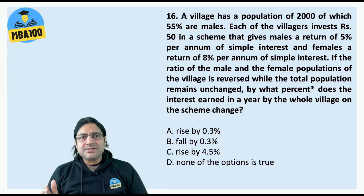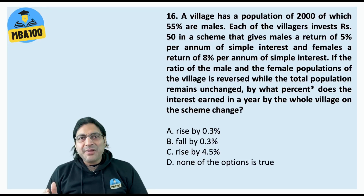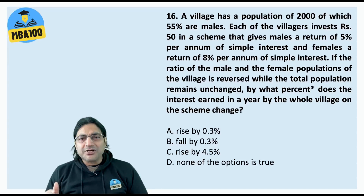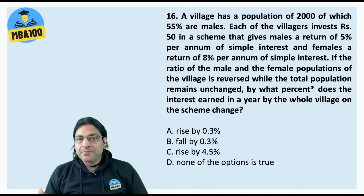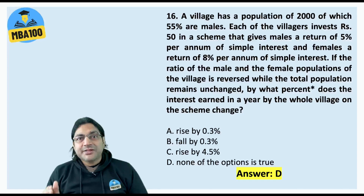Now here this question has a bit of technicality. If you look at the last but third line, it asks by what percent does the interest earned in a year increase. Many people have given answers that would be true only if you are asked by what percentage points. So when it comes to the difference in percentage points, it goes up by 0.3 percentage points. So that way the answer would be A, but here completely going by the language of the question, the answer should be none of the options is true, because they are not asking about the rise in percentage points — they are categorically asking the percentage rise.